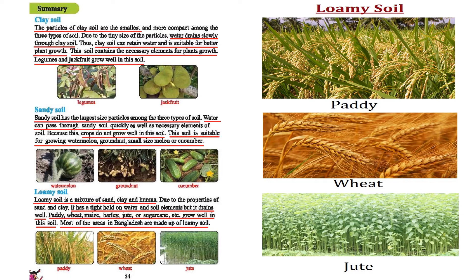Paddy, wheat, maize, barley, jute, and sugarcane grow well in loamy soil. Most of the areas in Bangladesh are made of loamy soil. As you have seen, loamy soil has mixed elements, so its properties are like a combination of sand and clay — it has a tight hold on water and can also drain the water very well.